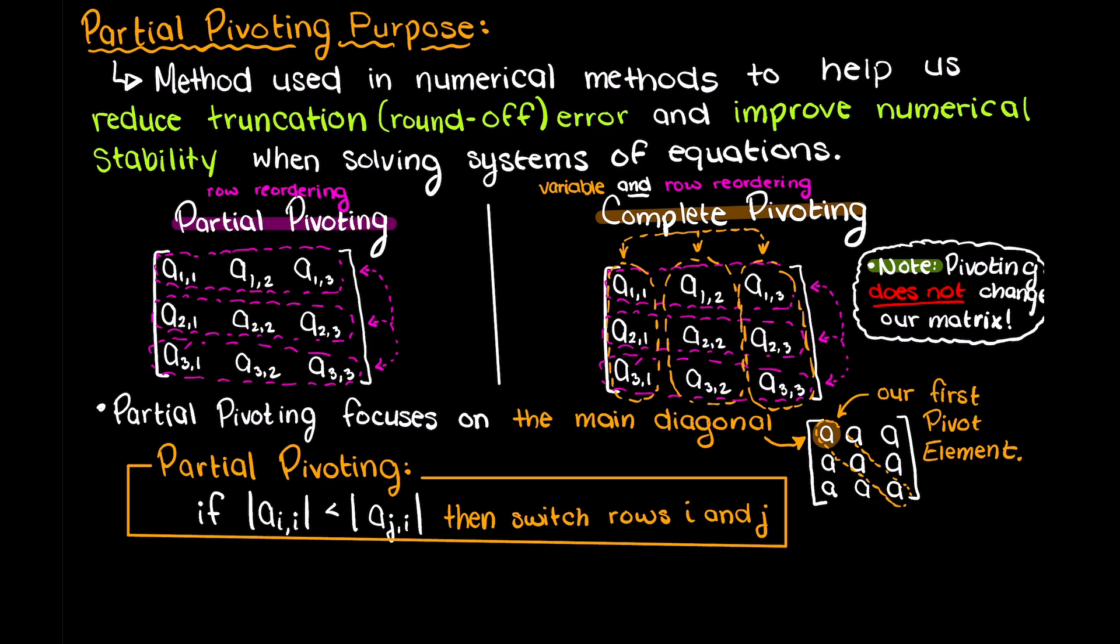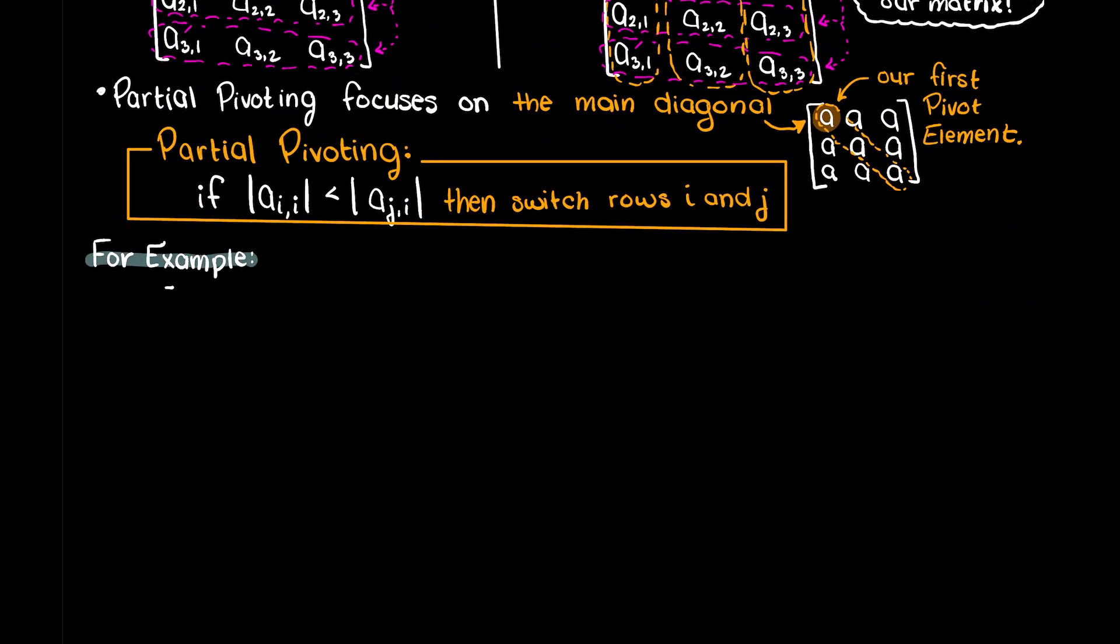Therefore, as an algorithm, the partial pivoting method is typically applied before each iteration. So for example, in Gauss' elimination problem, we would check if our main diagonal element is the largest within its column.